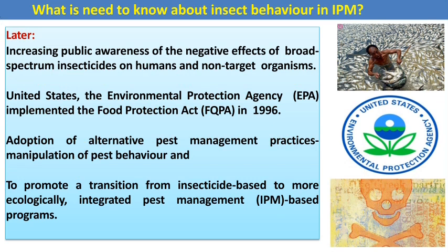Increasing public awareness of the negative effects of broad-spectrum insecticides on humans and non-target organisms is also a reason to use insect behavior in IPM. The United States Environmental Protection Agency implemented the Food Quality Protection Act in 1996, promoting the adoption of alternative pest management through pesticide manipulation of pest behavior and encouraging transition from insecticide-based to more ecologically integrated pest management programs.